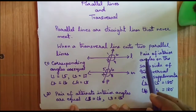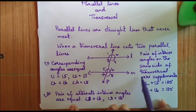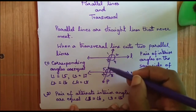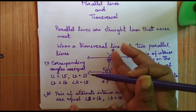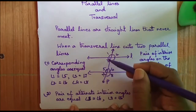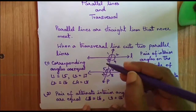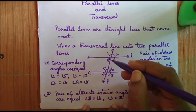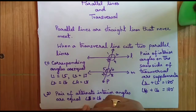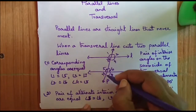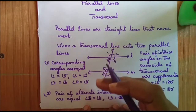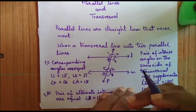Similarly, the pair of interior angles on the same side of the transversal are supplementary. These angles both lie to the left of the transversal, so they are supplementary. When you add angle 3 and angle 5, you get 180 degrees. Similarly, when you add angle 4 and angle 6, you get 180 degrees, because interior angles on the same side of the transversal are supplementary.